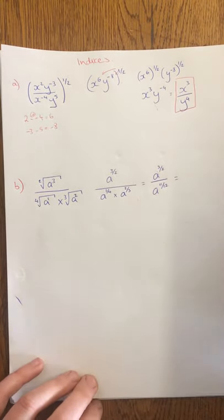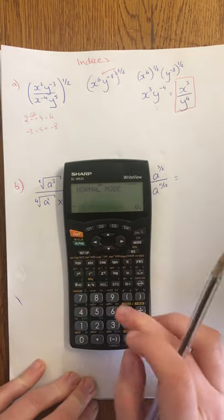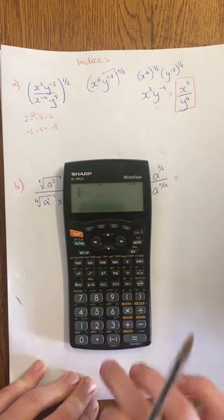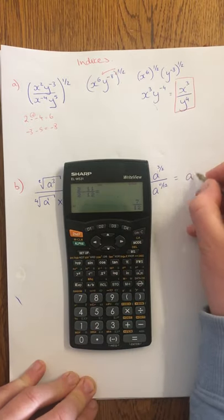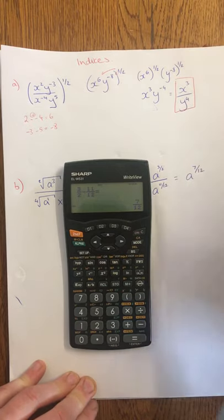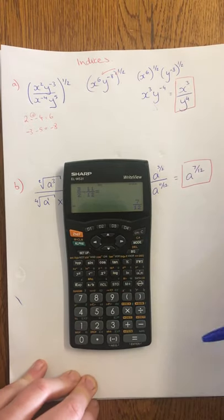And then when we have the same basis here and we're doing division, subtract the powers. So it's going to be 3 over 2 minus 11 over 12. And we're left with 8 to the power of 7 over 12. And that's our final answer like that.